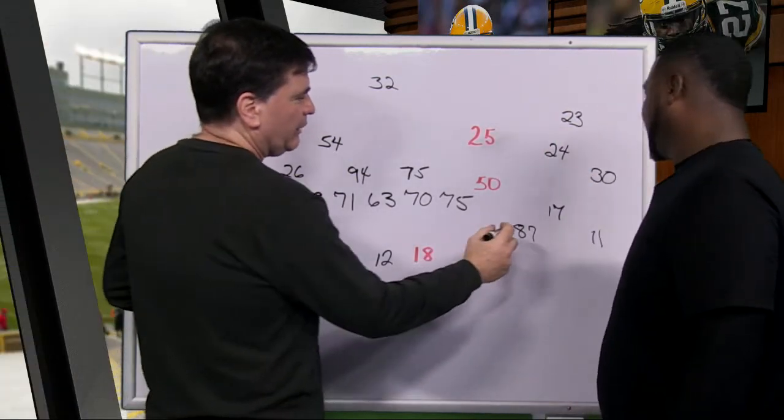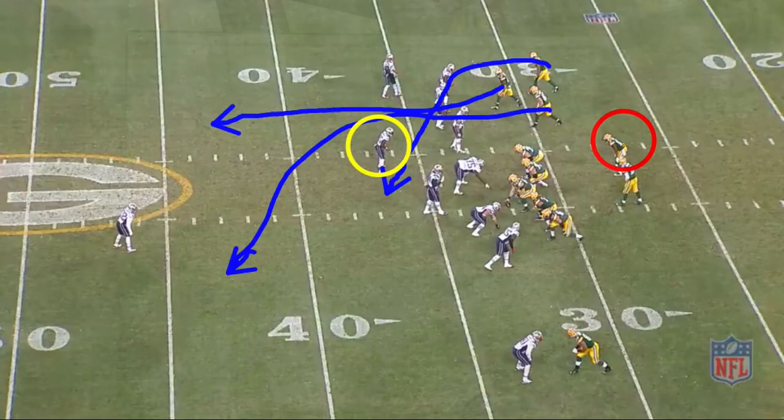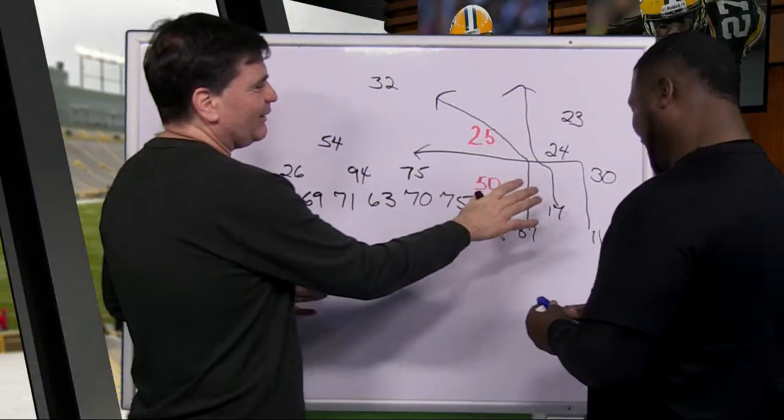Okay, so what we have on this side is Jordy Nelson running a post. Adam's kind of running a seam. And then Boykin running across there. Now, you can look at, on our screen there, and you see those routes. Perfect.